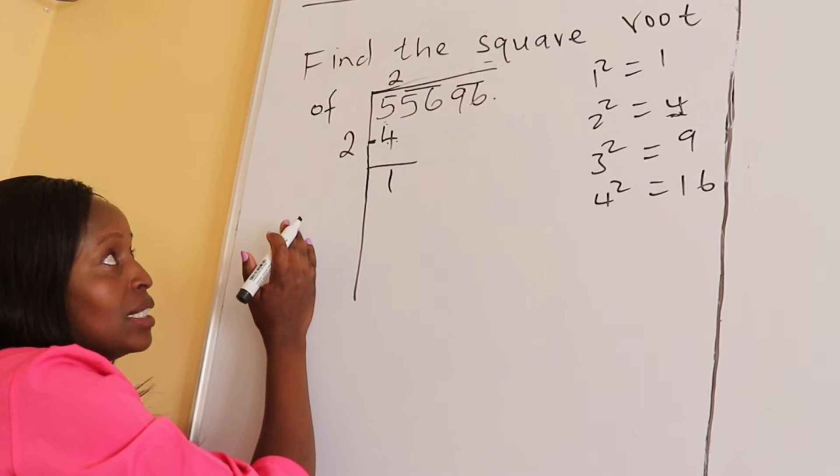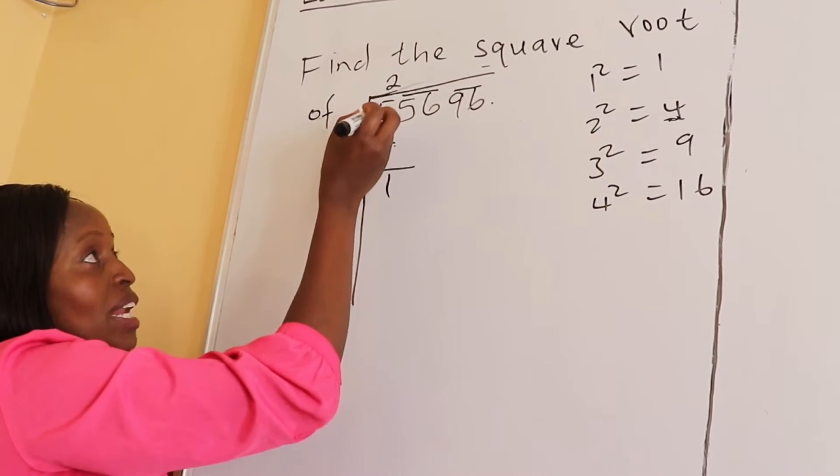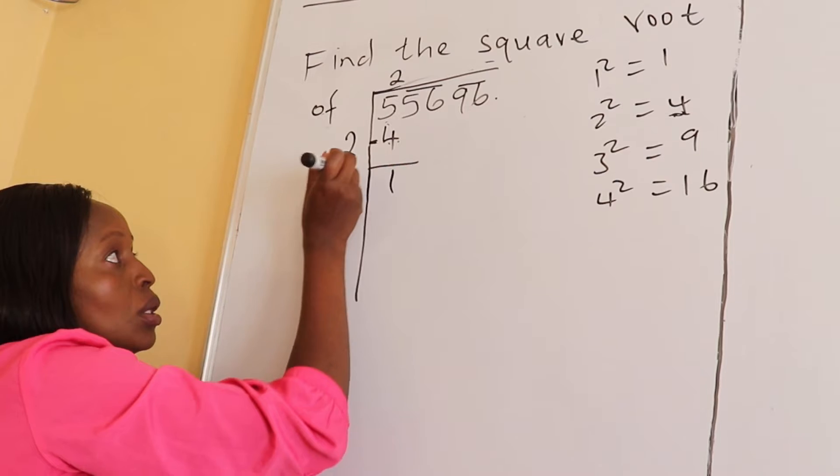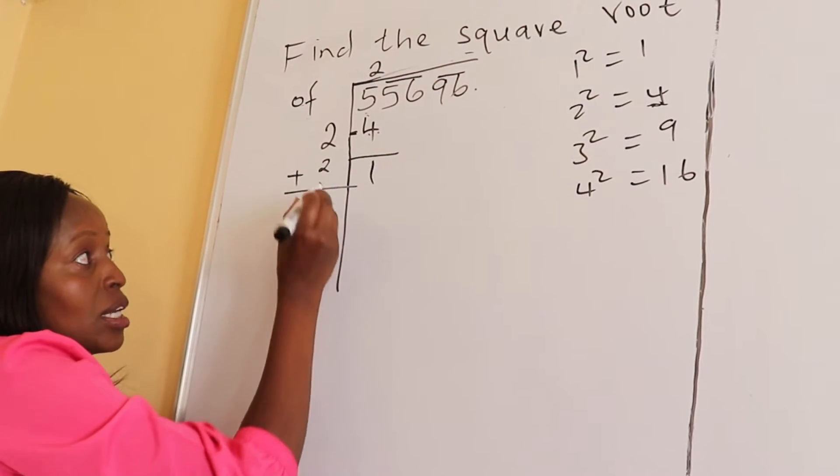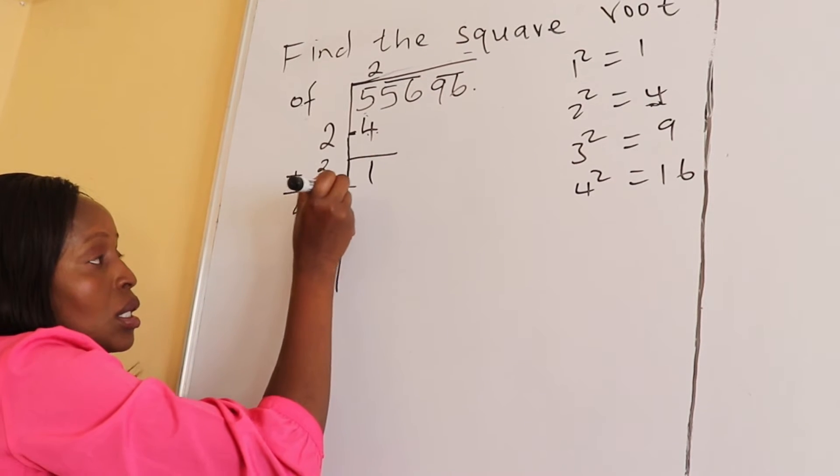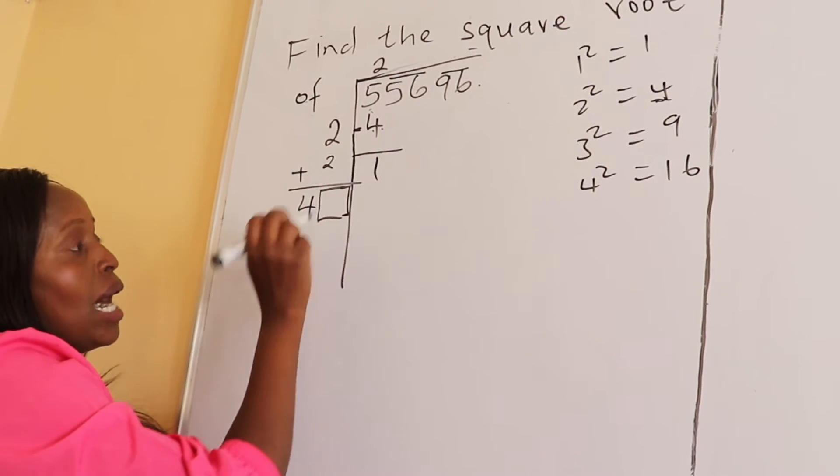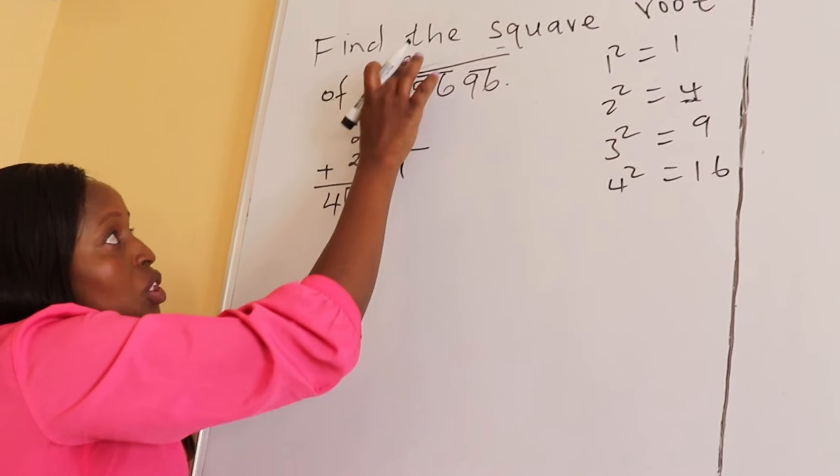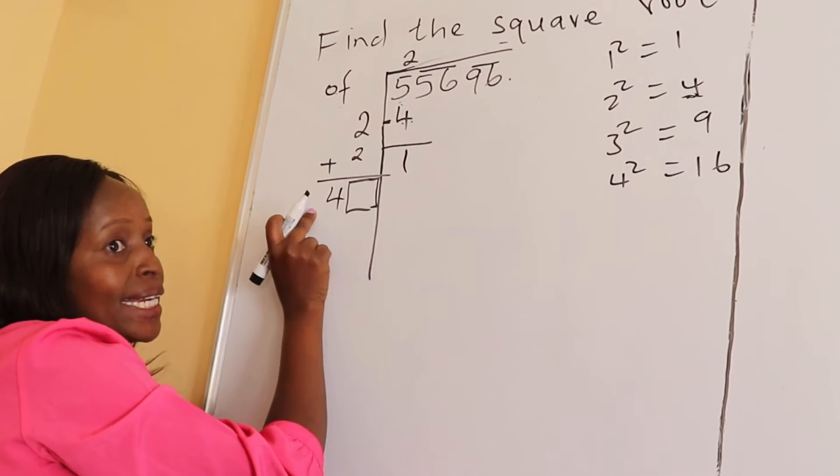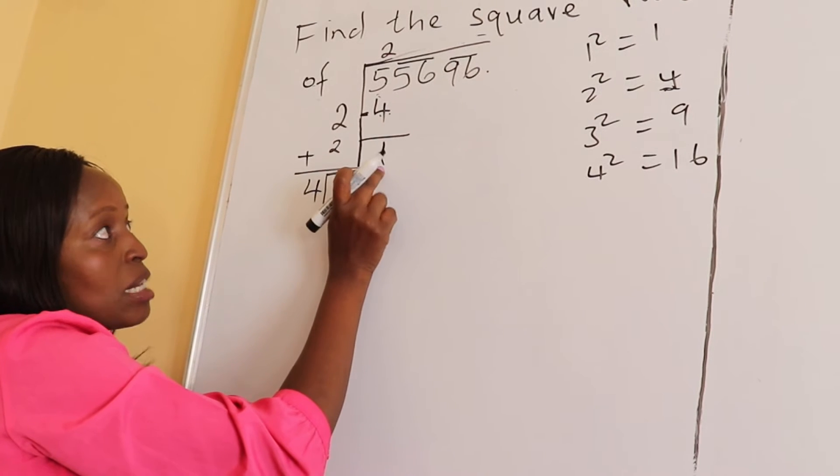Therefore, we take away 5 minus 4 equals 1. On this side we are subtracting, but on this side we are adding. We add the quotient, so plus 2 gives us 4. When we're in addition, make sure you leave a space here for a box.